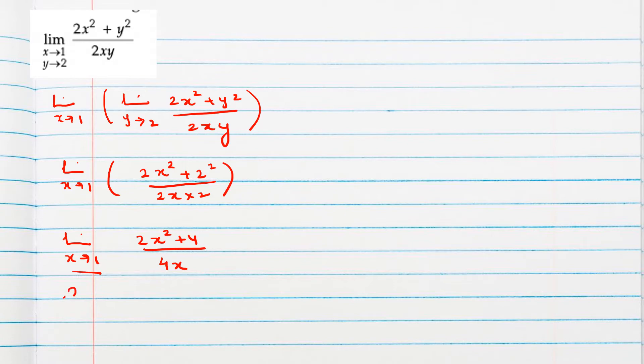So 2 plus 4 divided by 4, 6 by 4 means 3 by 2.